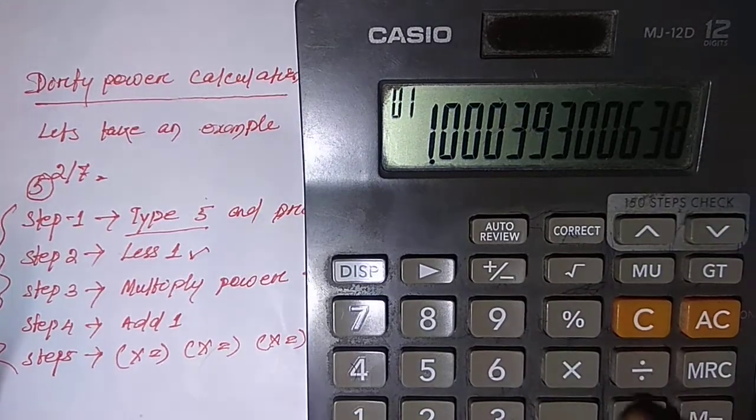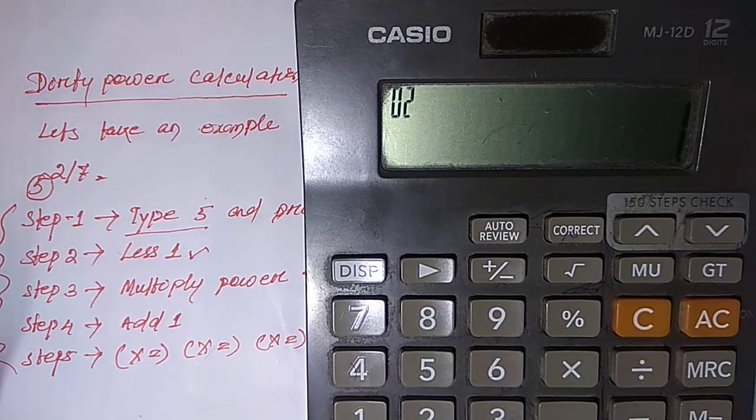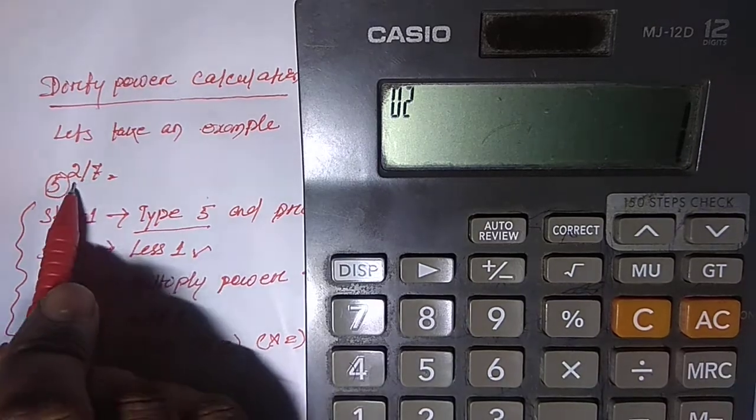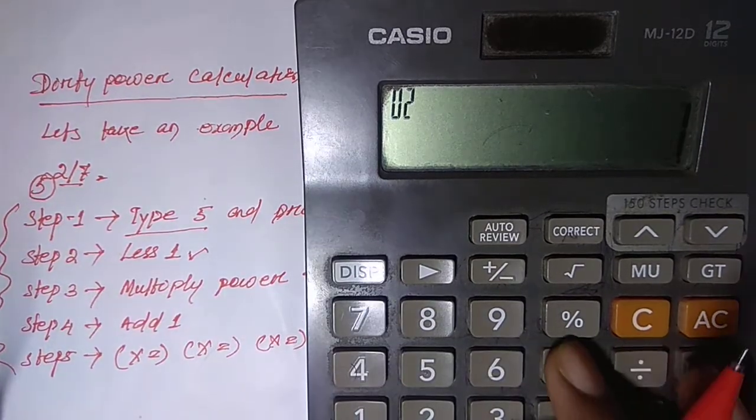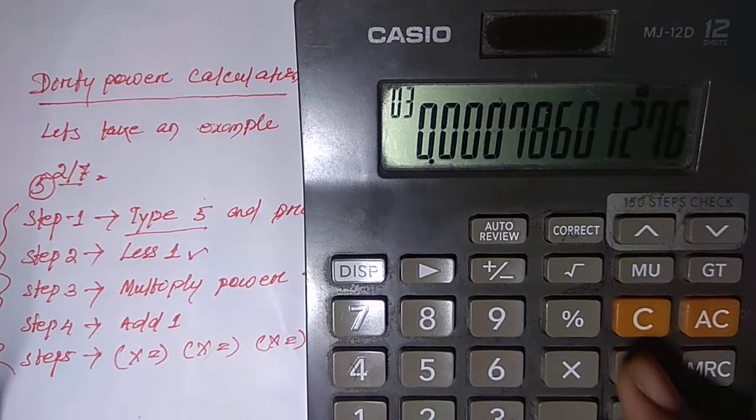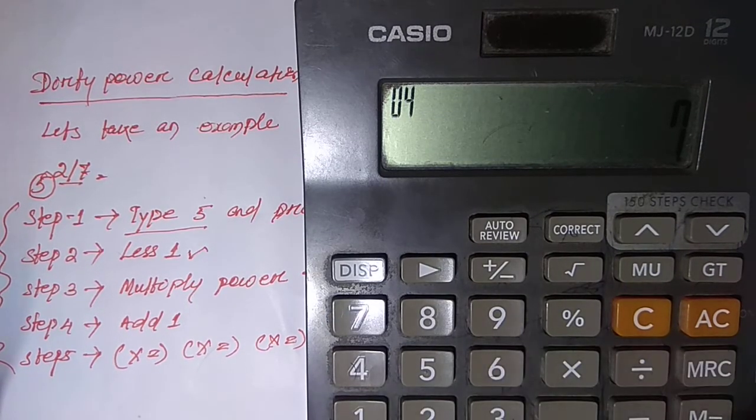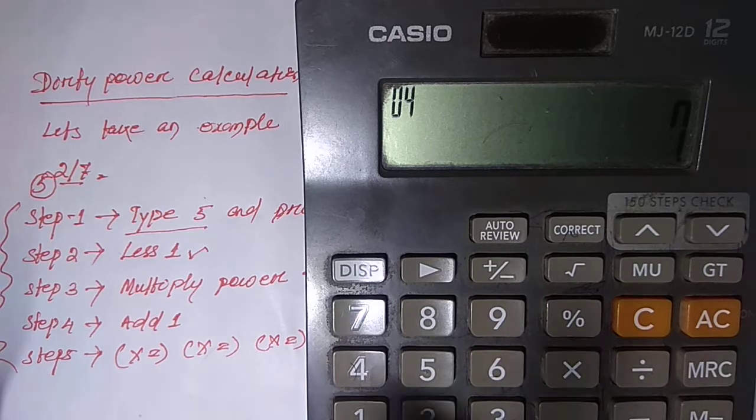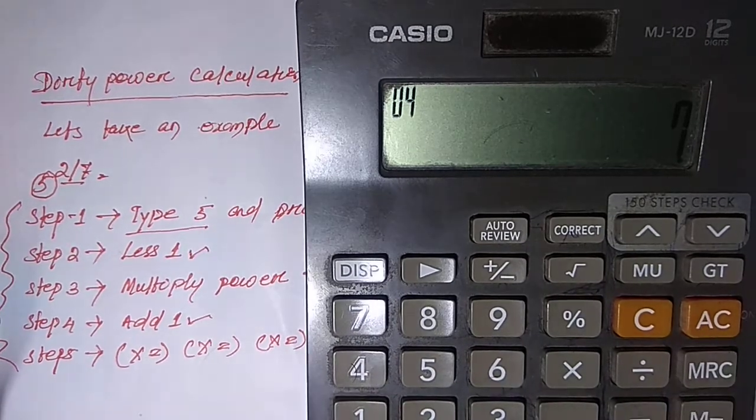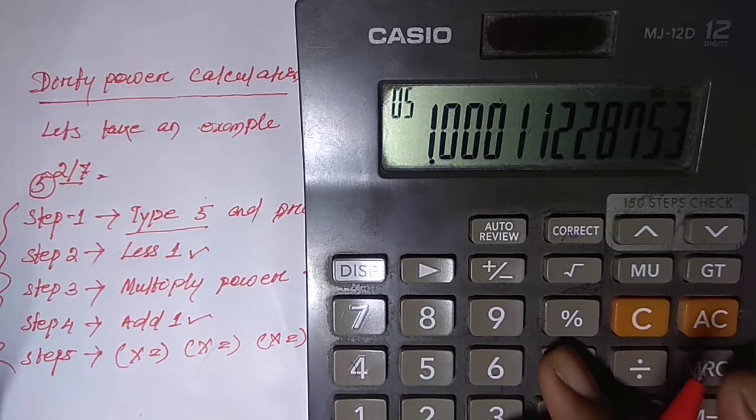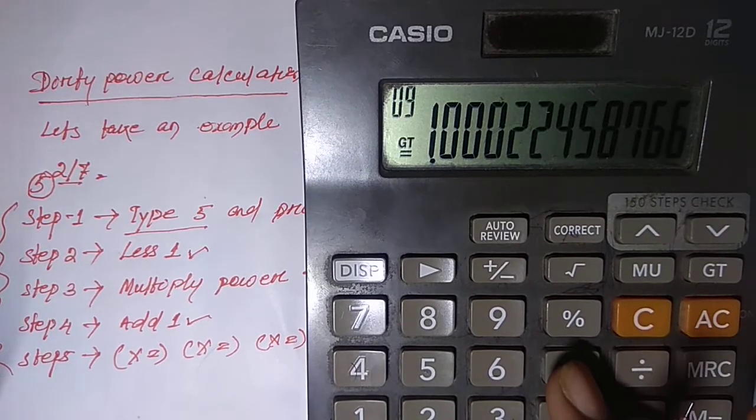Minus 1. Then multiply the power - power is 2 by 7, so multiply by 2 divided by 7. Then whatever amount will become, we have to add 1.